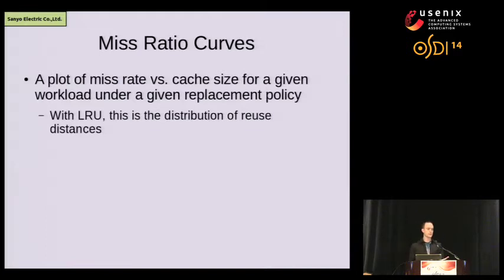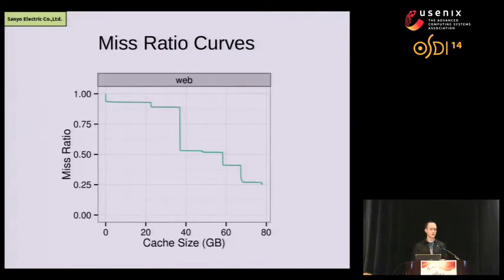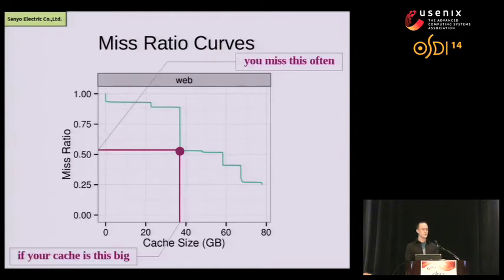It's common to plot these reuse distances as a miss ratio curve (MRC). A miss ratio curve is a plot of miss rate versus cache size for a specific workload under a specific replacement policy. We can construct an MRC for any arbitrary replacement policy. When we compute the MRC for an LRU policy, we're actually computing the distribution of reuse distances. Here's an example of a real-life MRC computed from a trace collected by MSR Cambridge, following a collection of enterprise servers for a week — this particular server is a web SQL server. To interpret the chart, pick a point on the line, follow it to the Y axis, and that gives the miss rate at the corresponding cache size on the X axis.